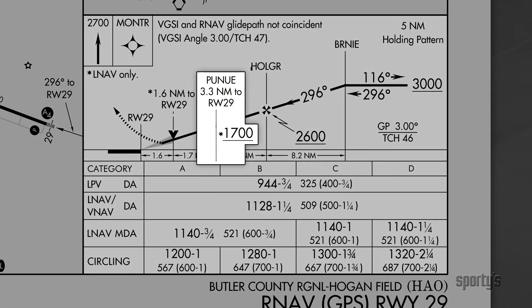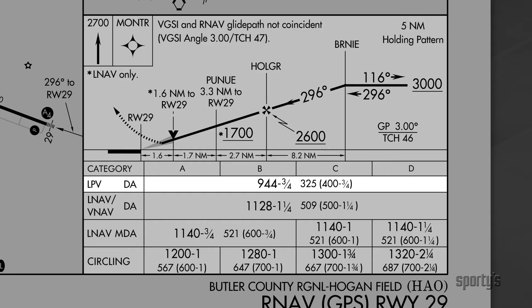The profile view shows a step-down altitude at PUNU. The asterisk beside the altitude points to a note indicating that it applies to LNAV only. Flying the LPV approach, we don't need to be concerned with that altitude unless the navigator downgrades the approach, which could occur during the RAIM check due to a WAAS outage or anomaly. Our decision altitude for the LPV approach is 944 feet, putting us 325 feet above the touchdown zone elevation. The LNAV MDA is nearly 200 feet higher.